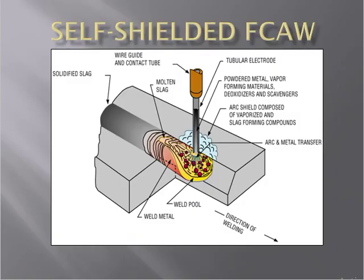Self-shielded FCAW means the electrode already provides its own shielding through the flux contained within it, so there is no need for external gas or flux. The tubular electrode contains powdered metal, vapor-forming metal, deoxidizers, scavengers, slag-forming compounds, and arc stabilizers. This makes it a self-shielded process — no extra shielding is required.